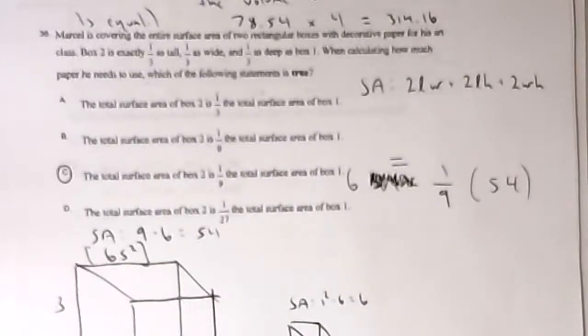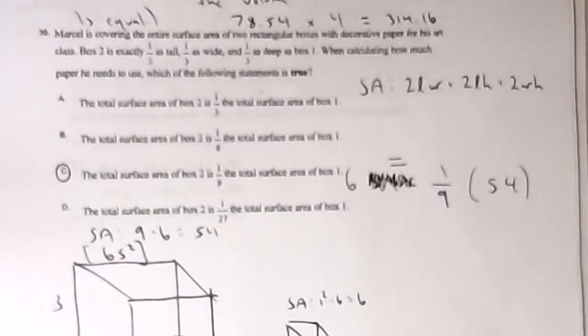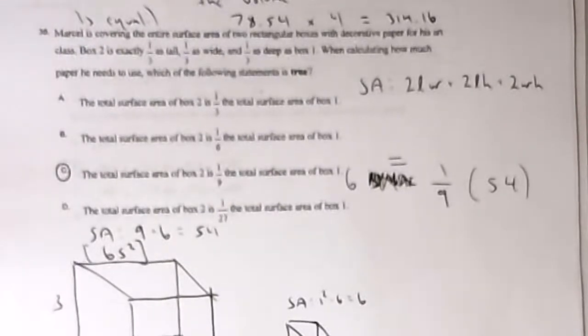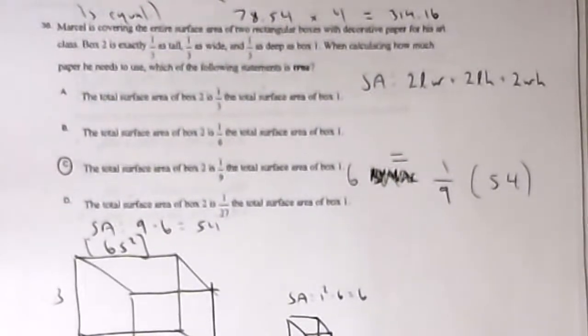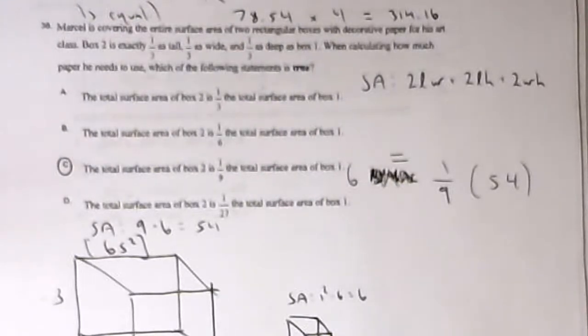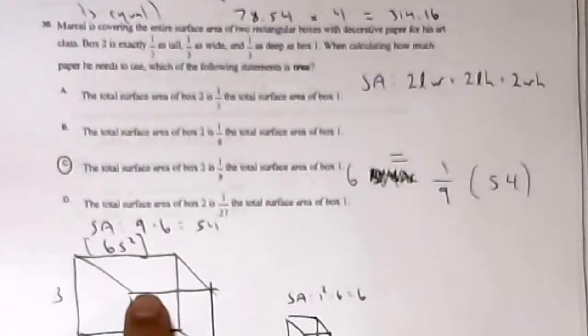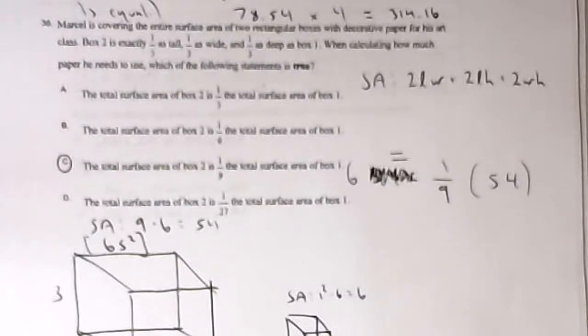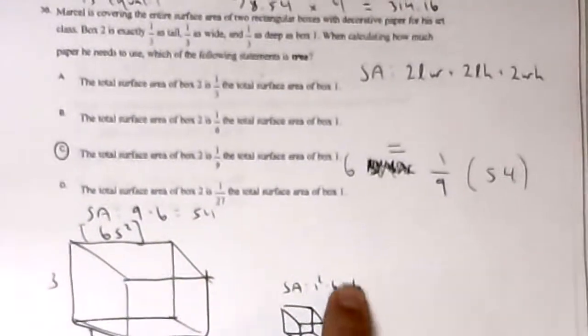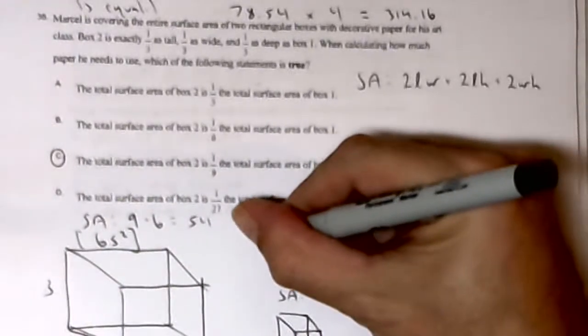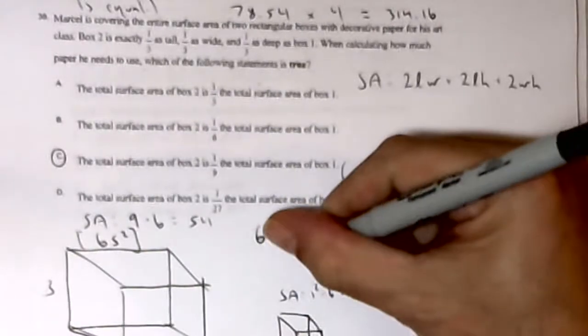This is a surface area of rectangular solids question. Box 2 is a third as tall, a third as wide, and a third as deep as box 1. For the small one I pick 1, 1, 1, and because it's a third, each dimension will be 3, 3, 3. Surface area is 6 times the square of the side. So this would be 3 squared is 9 times 6 is 54, and this is 1 squared is 1 times 6 is 6. So the surface area of the small box is one-ninth of the surface area of the large box.